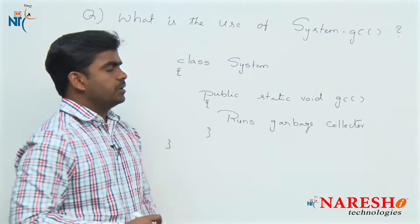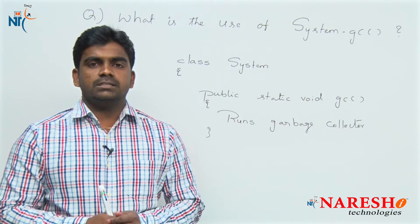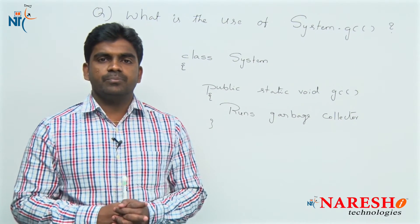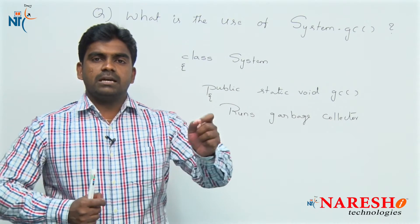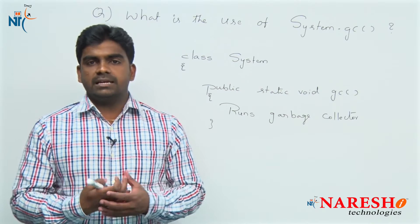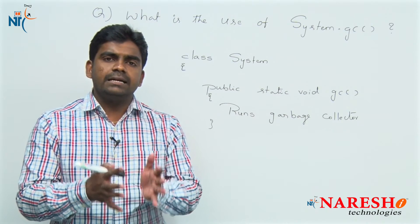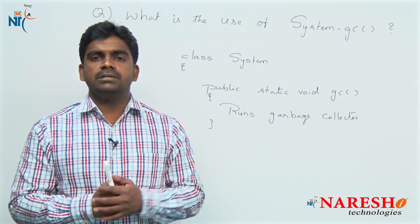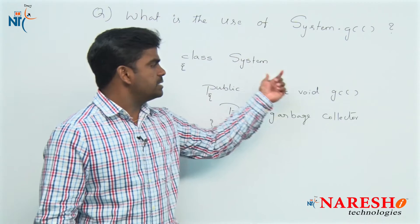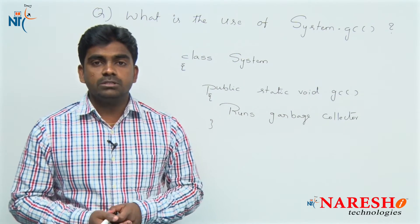Where do we use it exactly? In the process of garbage collection, the JVM implicitly starts the garbage collector thread. Whenever the garbage collector thread starts, it invokes the finalize method. So the Java garbage collection process is entirely internal, implicit, and automatic. Then why are we calling the System class GC method externally?